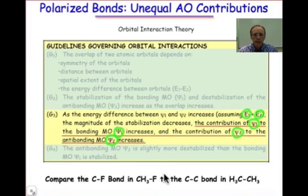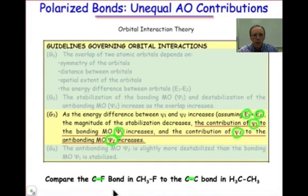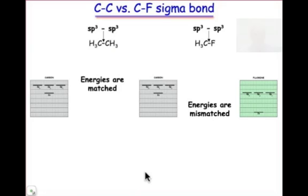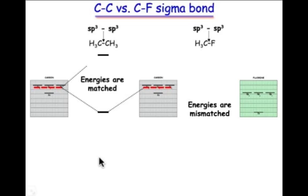Let's put these ideas into practice by comparing the non-polar carbon-carbon bond found in ethane to the polar covalent carbon-fluorine bond found in CH3F. We can use our hybrid atomic orbitals to make these two covalent bonds, beginning with the carbon-carbon bond. We can place those sp3 hybrid orbitals three-quarters of the way up from the 2s level, and combine those two sp3 orbitals together.